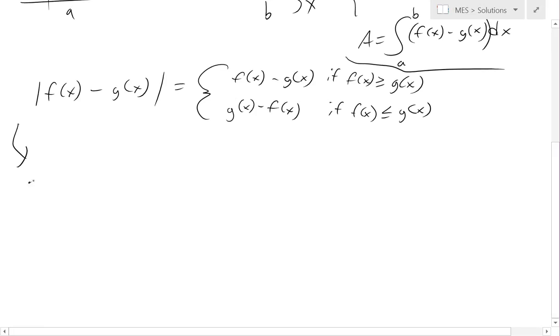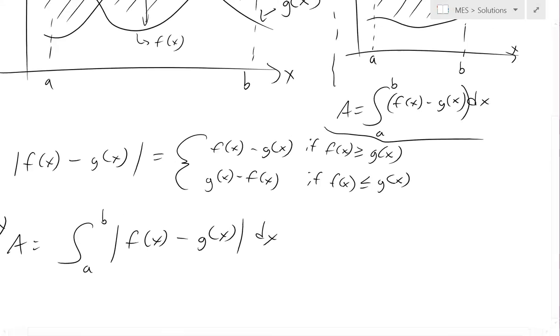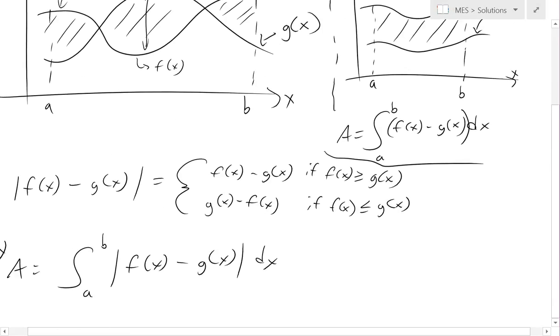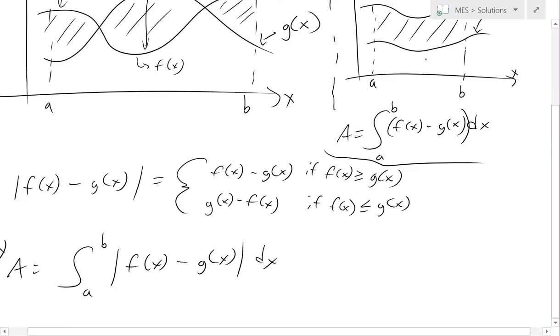would just be area equals to integral from a to b of absolute value of f of x minus g of x dx right there. And this applies for this case because the absolute value is going to be positive. This one's always positive.